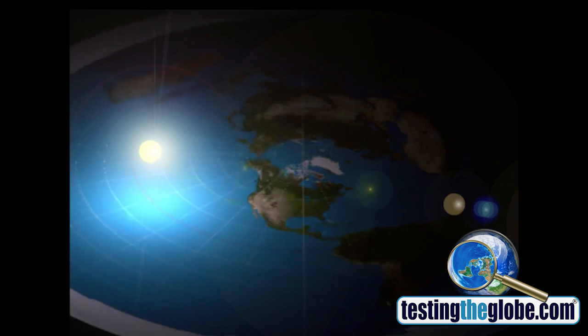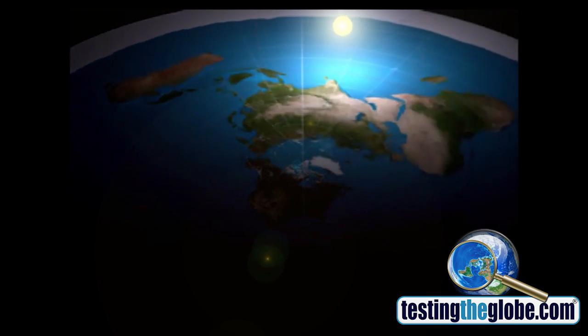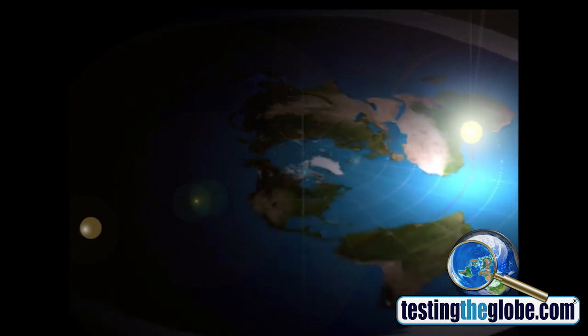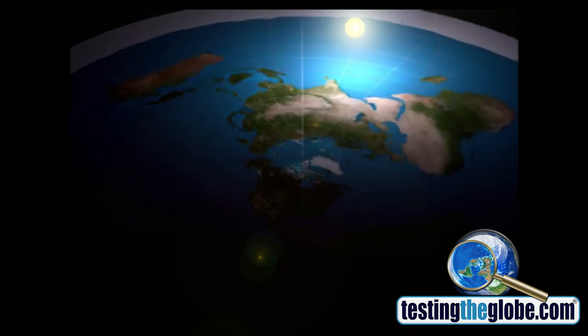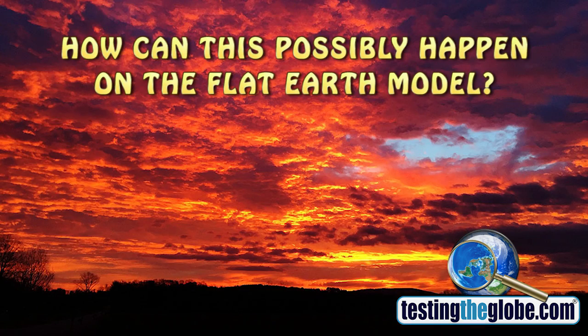When you show people the model of the sun going around in a parallel path above the circle of the earth, they say, in that situation, the sun is above the clouds, so how could it possibly illuminate the bottom of the clouds? So I decided to take up that challenge based on what I had learned in my previous experiments.